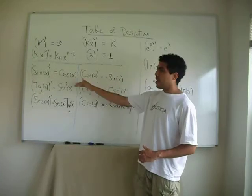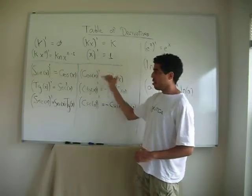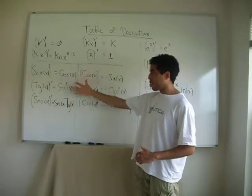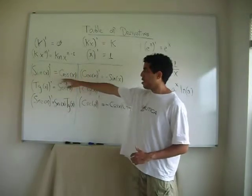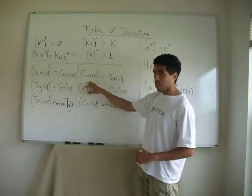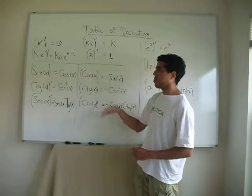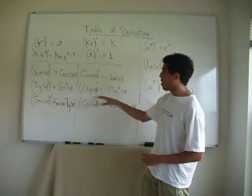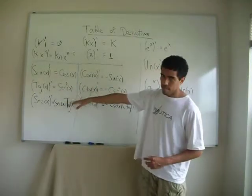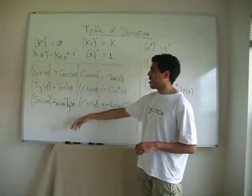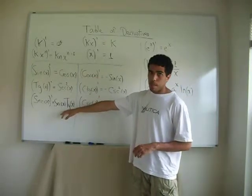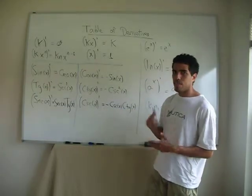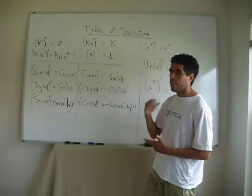Look, there is a nice relationship between the normal trigonometric and the co-trigonometric functions. Sine to cosine. Cosine to negative sine. Tangent to secant squared. Cotangent to negative cosecant squared. Sort of the opposite. Secant to secant times tangent. Cosecant to negative cosecant cotangent. So it's pretty easy to memorize these functions.